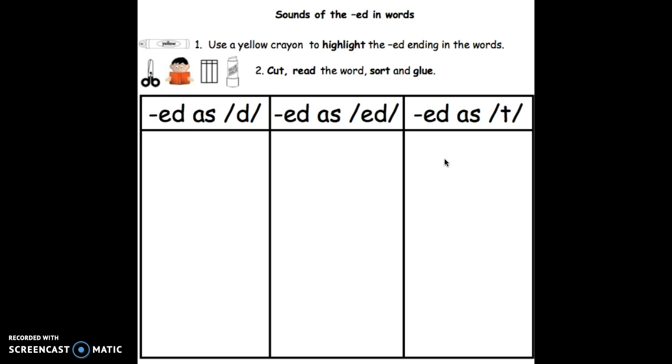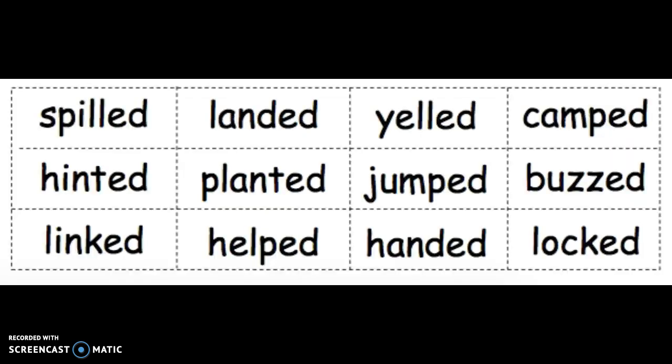So you have to listen carefully to what sound ed is making at the end of the word: /d/, /ed/, or /t/. Number one. Use a yellow crayon to highlight the ed ending in the words. Your words are at the bottom of your paper. Please go ahead and highlight the ed at the end of each word. Pause the video and do that now.